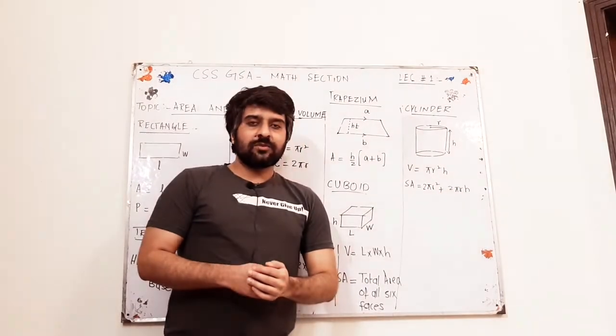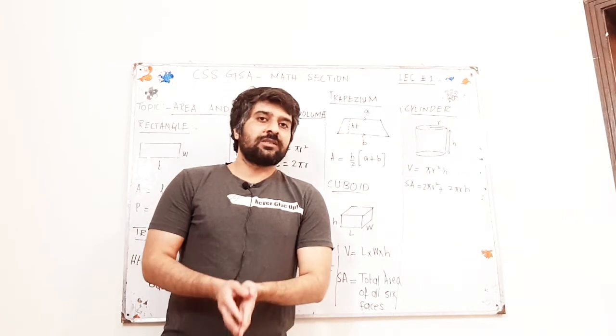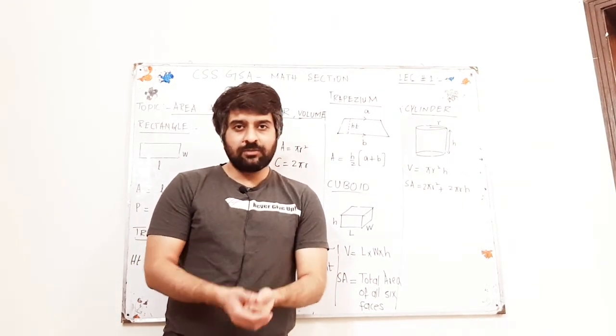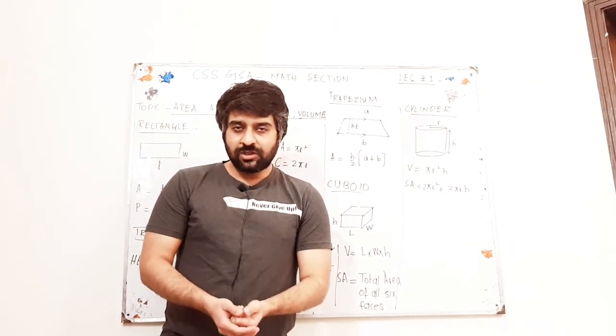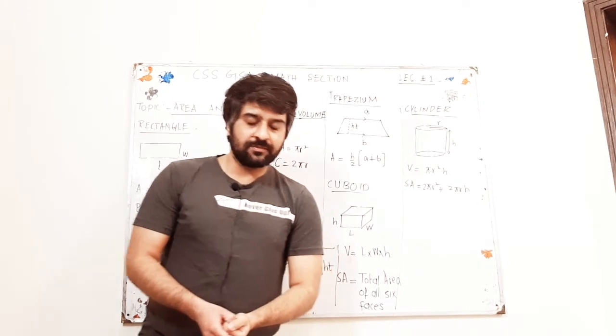So these were the basic formulas to find perimeter, area and volume of some 2D and 3D shapes. Thank you so much.